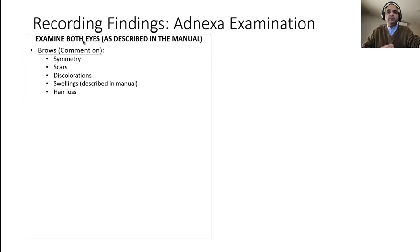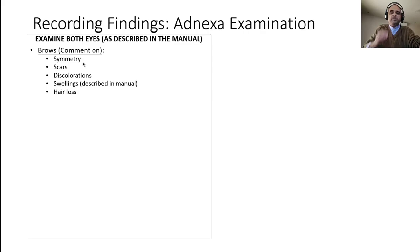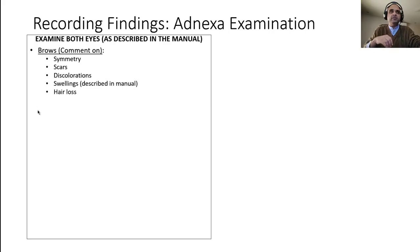When recording your findings, remember to examine both eyes and describe findings for both. This is covered in the clerkship manual under history and examination, and also with every clinical skill. When describing the brows: comment on symmetry — are they at the same level? Note any scars, discolorations, or swellings, describing location as given in the clerkship manual.